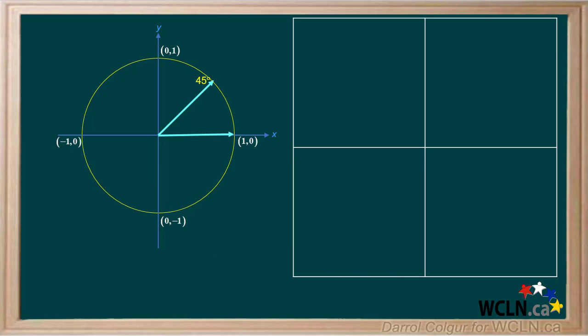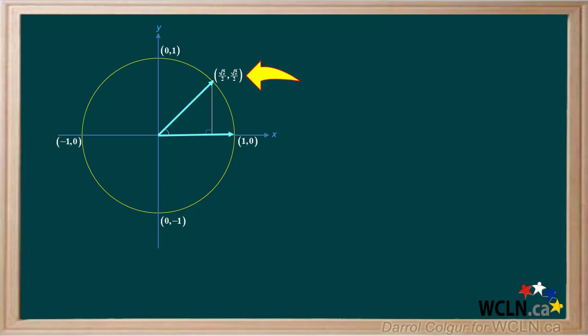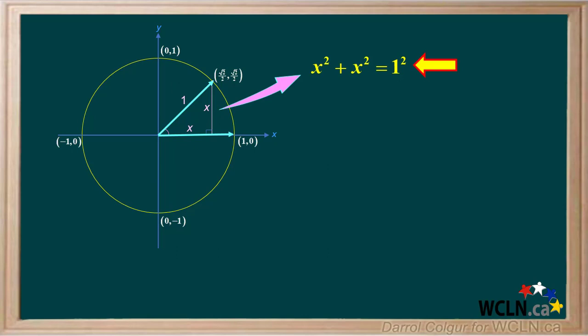We'll construct a table to show our values at four different special angles, and add a right triangle. The reference angle for a 45-degree angle in standard position is also 45 degrees. The x and y coordinates for this point are both positive root 2 over 2. This is a 45-45-90 triangle, so the legs are equal and we'll call them both x. The hypotenuse is the same as the radius of our circle, which is 1.